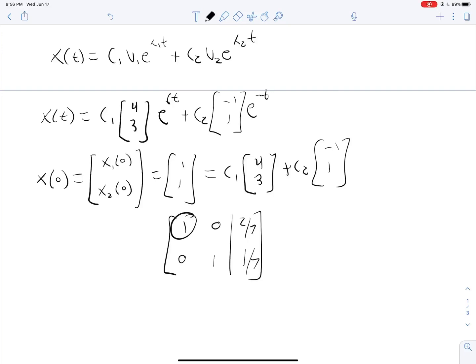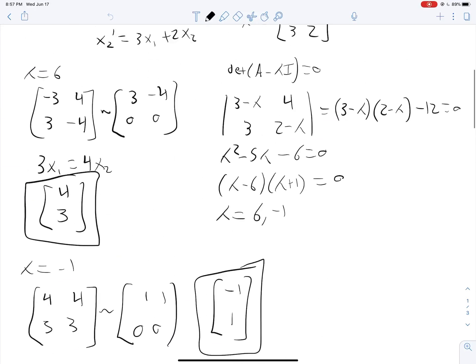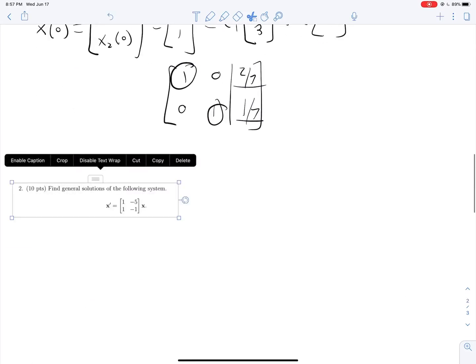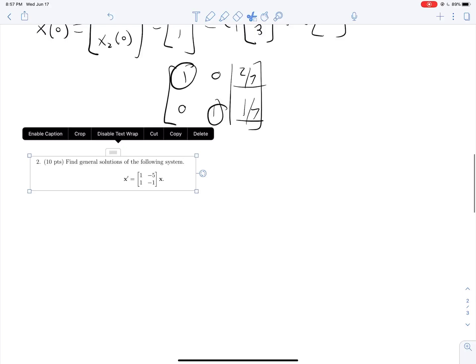So this means that c1 is equal to 2 over 7, and c2 is 1 over 7. So just replacing that up there, 2 over 7, 1 over 7, we have our answer. And I'm going to go check that real quick, and I'll be right back. Okay, that's correct. Let's go grab our second question.